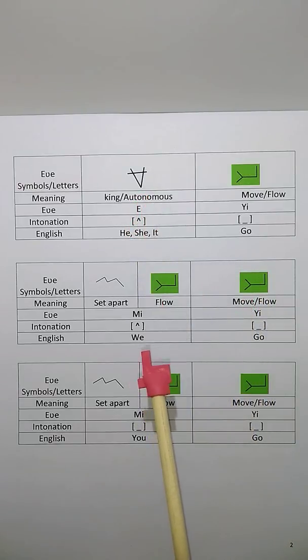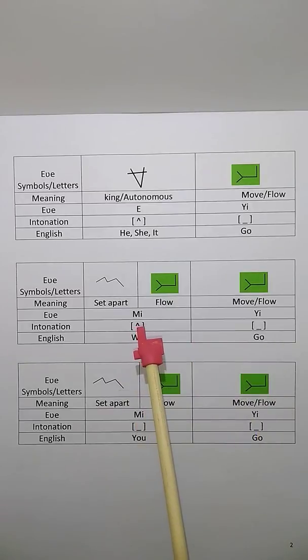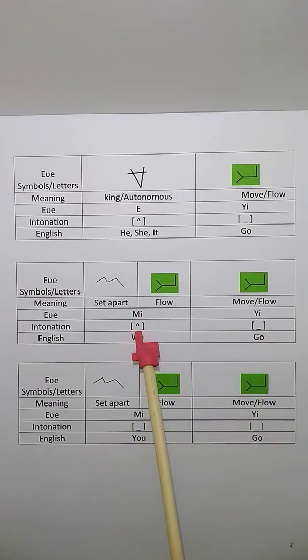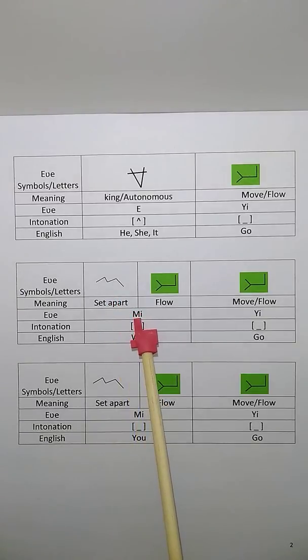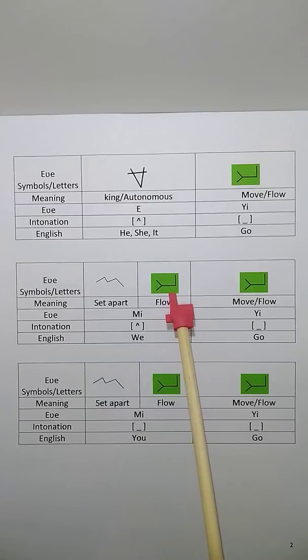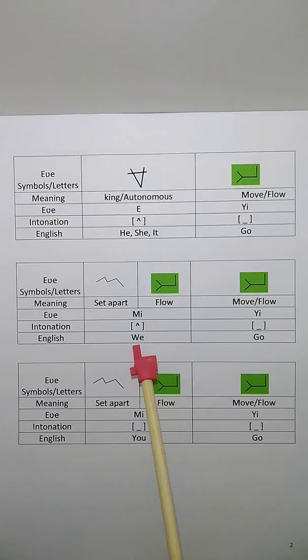And how do you say we go in ancient Hebrew? It is me, high intonation, ye. Here you have the ma and the ye, which is individuals flowing together. That's me, or we. Me ye.